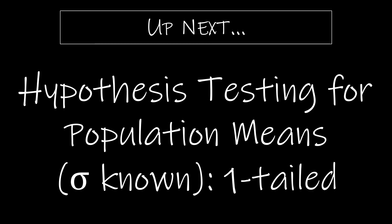Up next, we're moving on to section 10.2, which is actually performing some hypothesis testing. So hopefully 10.1 gave you a good foundation. Starting in 10.2, we're going to take a look at hypothesis testing for population means where sigma is known, and it's a one-tailed alternative hypothesis.